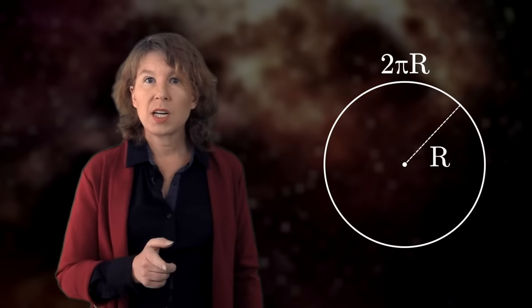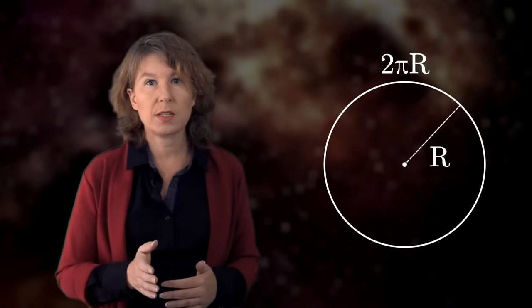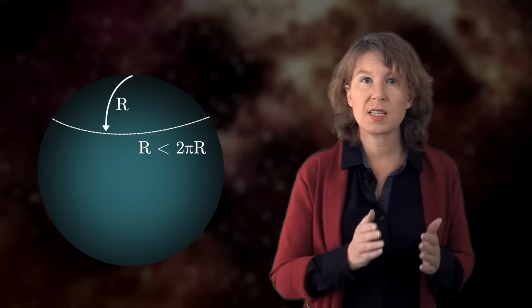There is another way the ant can figure out it's in a curved space. In flat space, the circumference of a circle is related to the radius by 2 pi r, where r is the radius of the circle. But that relation too doesn't hold in a curved space. If our ant crawls a distance r from the pole of the sphere and then goes around in a circle, the radius of the circle will be less than 2 pi r. This means measuring the circumference is another way to find out the surface is curved without knowing anything about the embedding space.